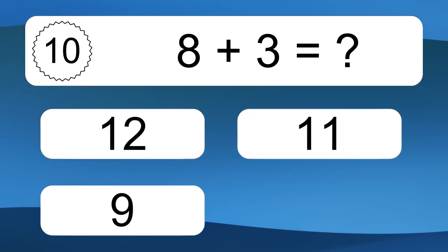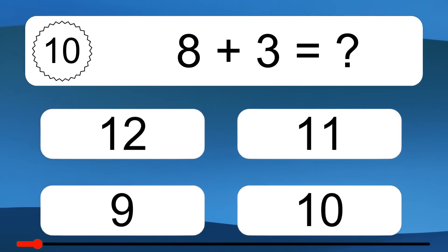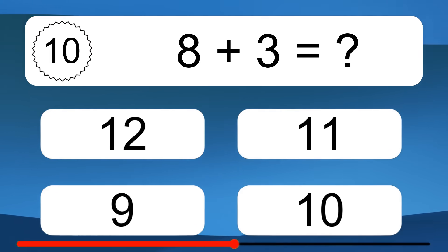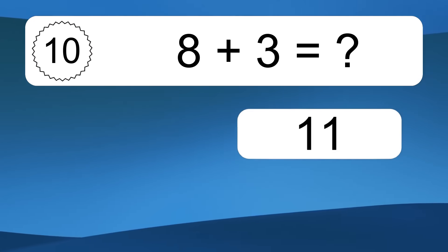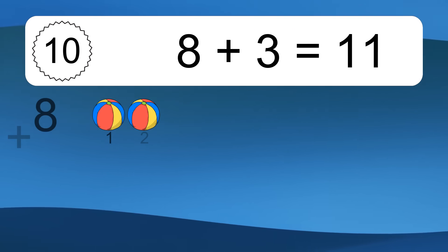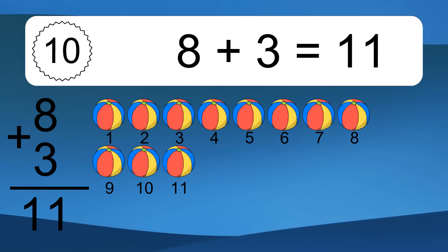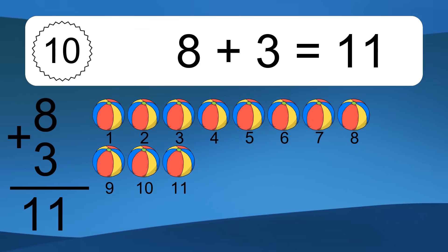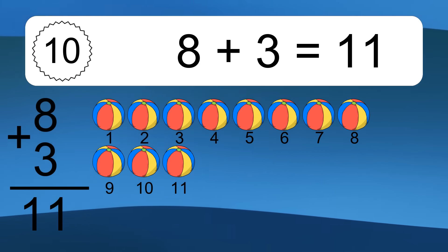8 plus 3 equals what? 8 plus 3 equals 11. Let's count it: 1, 2, 3, 4, 5, 6, 7, 8, 9, 10, 11.